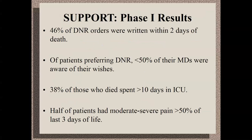We talked about advanced directives and prognostication — good prognostication can lead to better planning. Not talking about anything is not great. About half of all DNR orders are written in the last two days of life, which isn't unreasonable in some cases, but think about the value and utility — think about what this does to the general public.